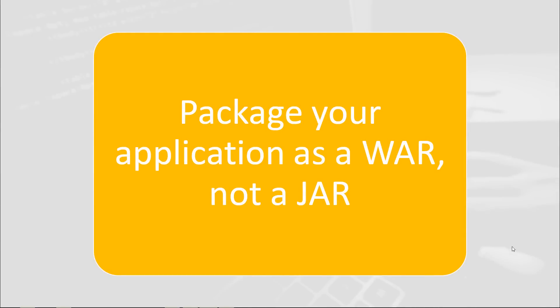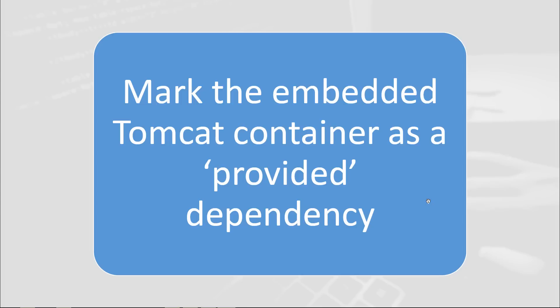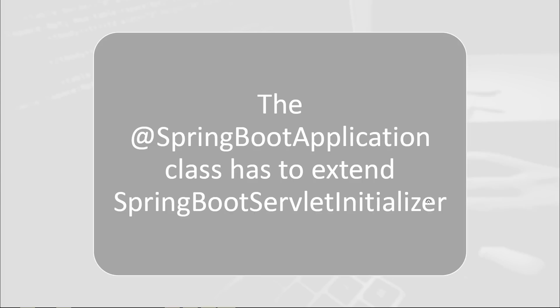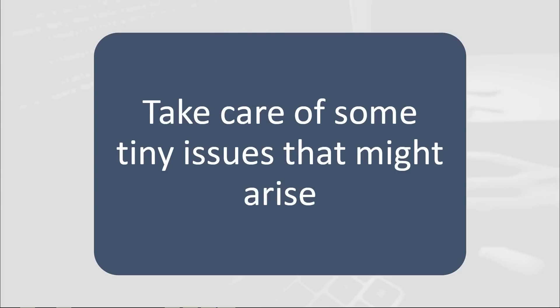Let's make a small recap. To package your Spring Boot application as a WAR file and deploy to Tomcat: first, change the application packaging in pom.xml from JAR to WAR; second, mark the embedded Tomcat container dependency as 'provided'; third, go to your Spring Boot application class and extend SpringBootServletInitializer, overriding the configure method. Before deploying, make sure your base path is configurable, and be aware that server properties in application.properties are only applied when using an embedded container.